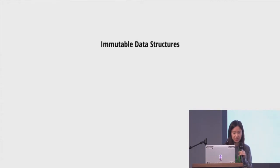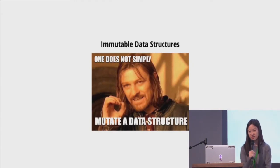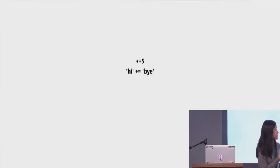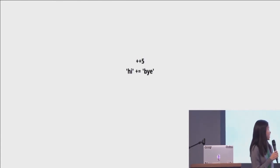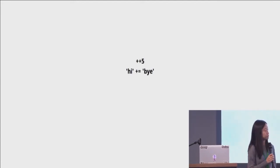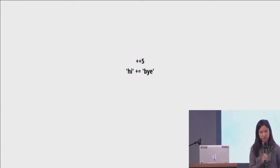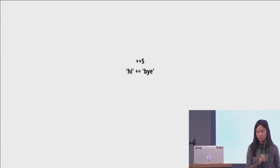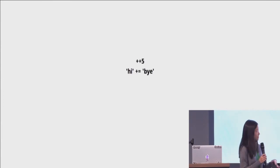The second concept is immutable data structures — because one does not simply mutate a data structure. Let's think about plus-plus five and 'hi' plus 'bye'. When we first look at them, plus-plus five simply returns a six. We wouldn't expect this to change all of the fives in your code to six, right? Same thing with 'hi' plus 'bye' — we wouldn't want all of the 'hi's to change, only this one.